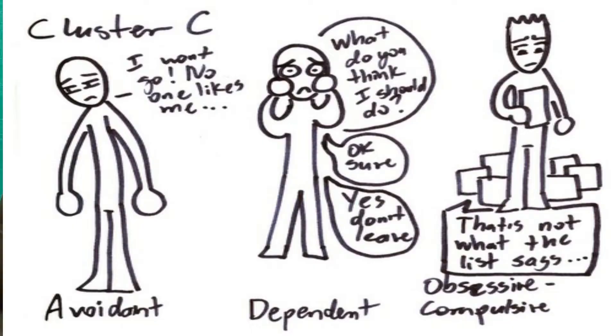The topic we are going to discuss today is cluster C personality disorders. In my previous videos I have discussed cluster A and cluster B, accounting to about 7 personality disorders — please do watch those videos, links are in the description box. Today we are going to see 3 personality disorders in the cluster C category, with the commonalities of fearfulness and anxiety — that is the most common trait of these 3 disorders.